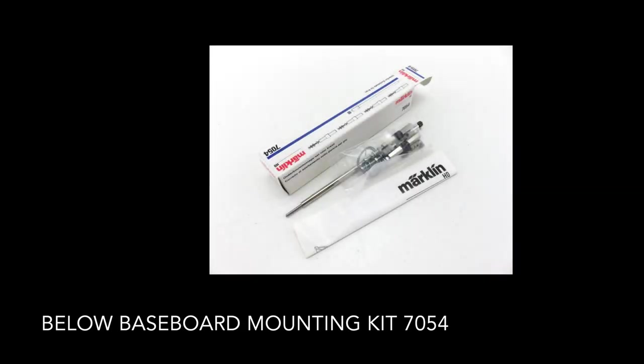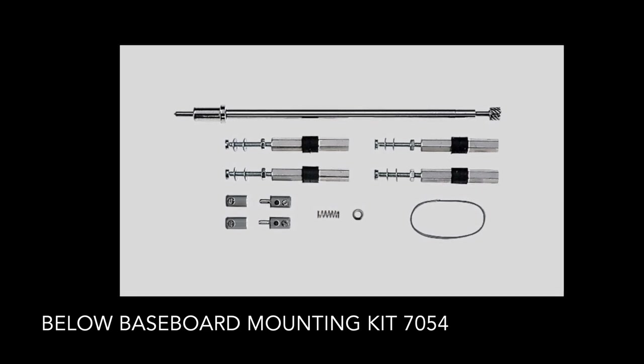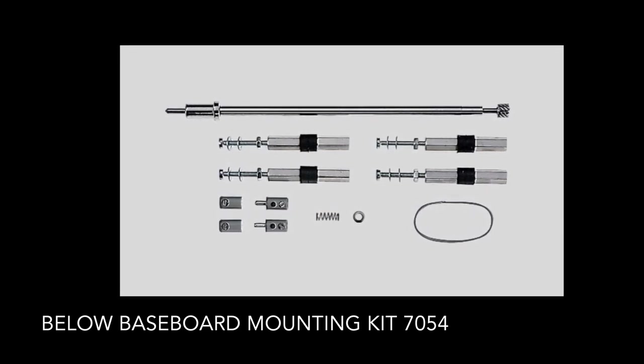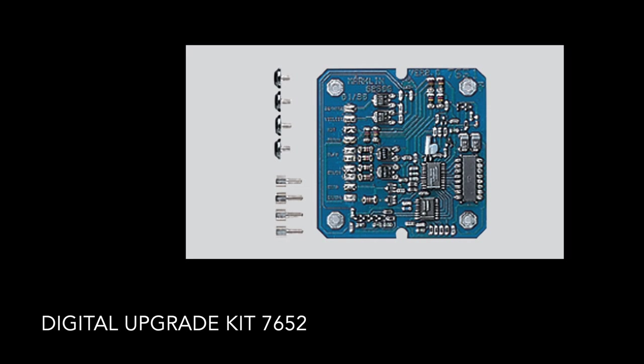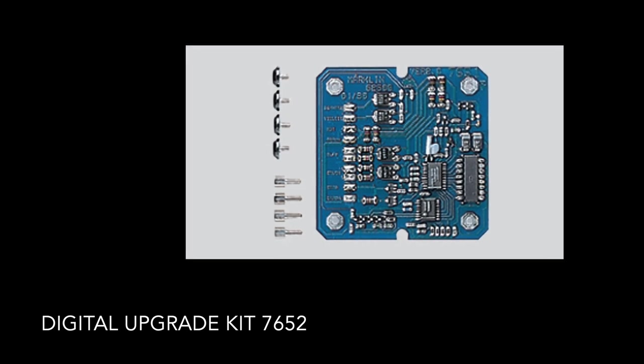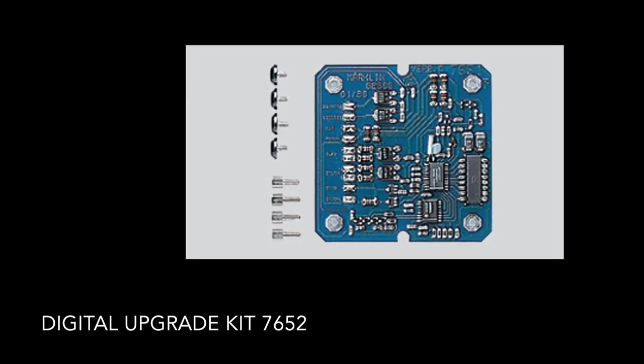Merklin didn't produce much in terms of add-ons for the crane itself. There was a below-baseboard mounting kit, reference number 7054, which comprises of an extended transmission shaft and some spacers. This kit was made available to buy between 1994 and 2004.